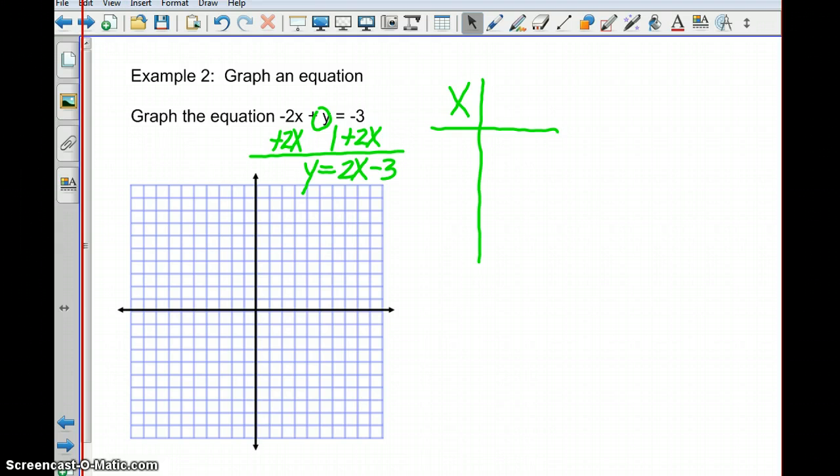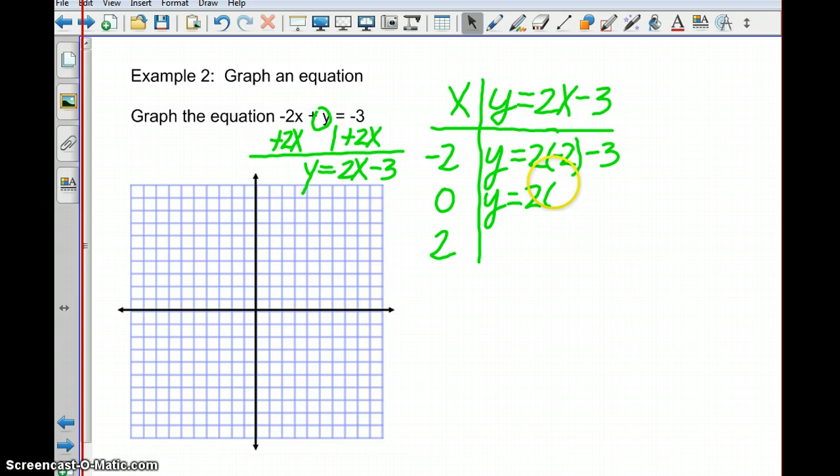So here we just want to choose some numbers to plug in for x. Again, I usually choose some negative values, a value of 0, and then some positives as well. So I'm just going to go ahead and plug in negative 2, 0, and 2. And then by plugging these values of x, I want to see what y is. So remember, based on what we just did with the equation, y is equal to 2 times whatever x is minus 3. So we're going to take that equation, and we're going to replace x with negative 2. Let's see what that does for y. We're going to do it for 0, and then also with the 2.